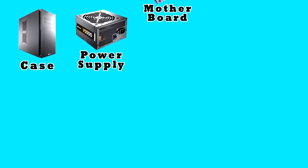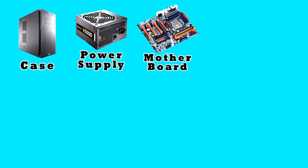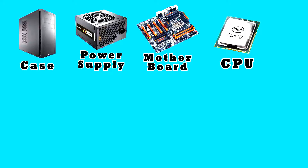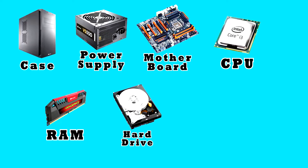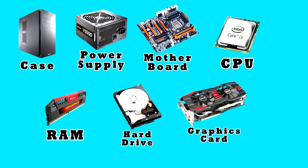The seven essential parts are: case, power supply, motherboard, CPU, RAM, hard drive, and graphics card. These are the fundamental parts of any desktop computer.